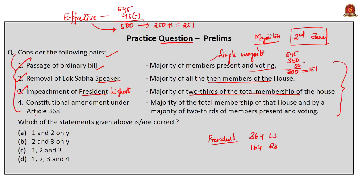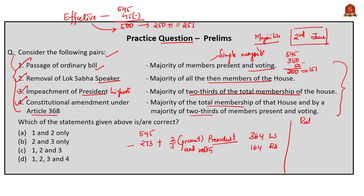Coming to the fourth one — constitutional amendment under Article 368. To amend the constitution under Article 368, you need a majority of total membership of that house and a majority of not less than two-thirds of members of that house present and voting. Out of 545 members in Lok Sabha, to make a constitutional amendment we need a minimum of 273 votes plus two-thirds of members present on that day. Additionally, there is a condition under Article 368 where ratification of half of the states is required — for example, if the amendment seeks to make changes in Articles 54, 55, 73, the seventh schedule, or representation of states in parliament.